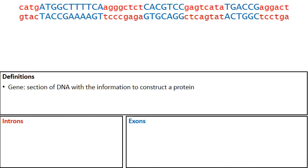Here is a gene — here's a section of DNA. Notice how A pairs to T and C pairs to G. I've color-coded everything: red will eventually be deemed an intron, and everything in blue will eventually be deemed an exon.